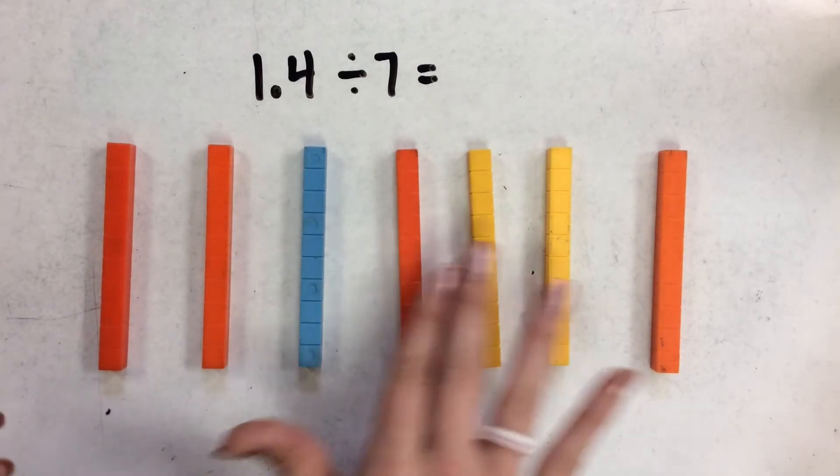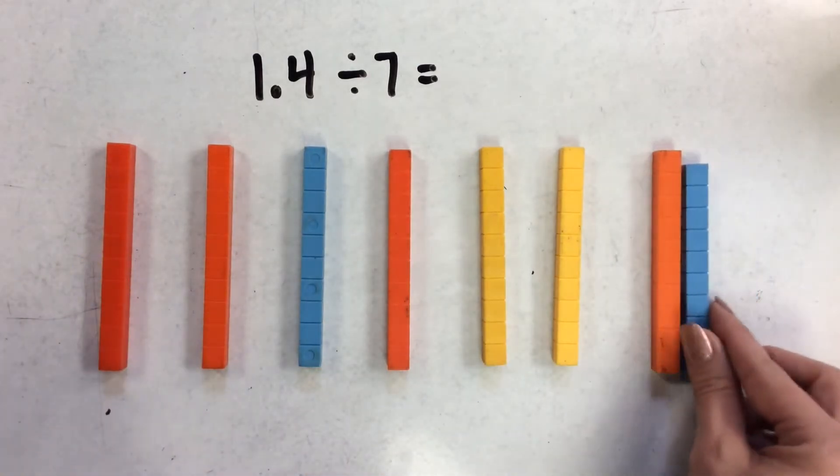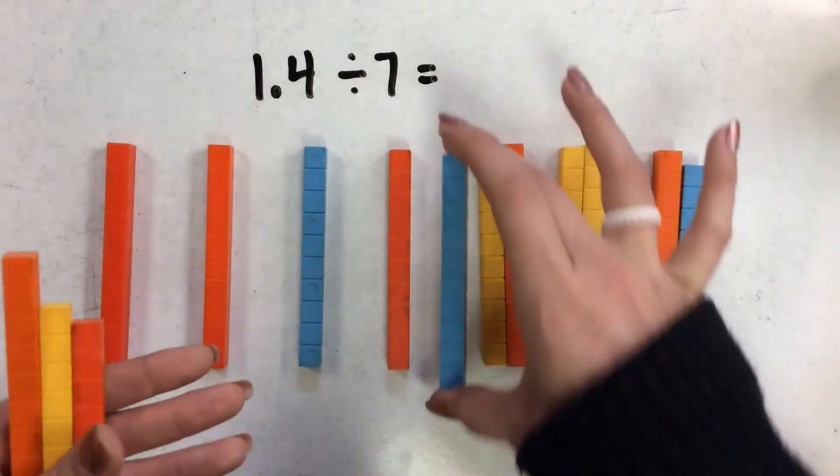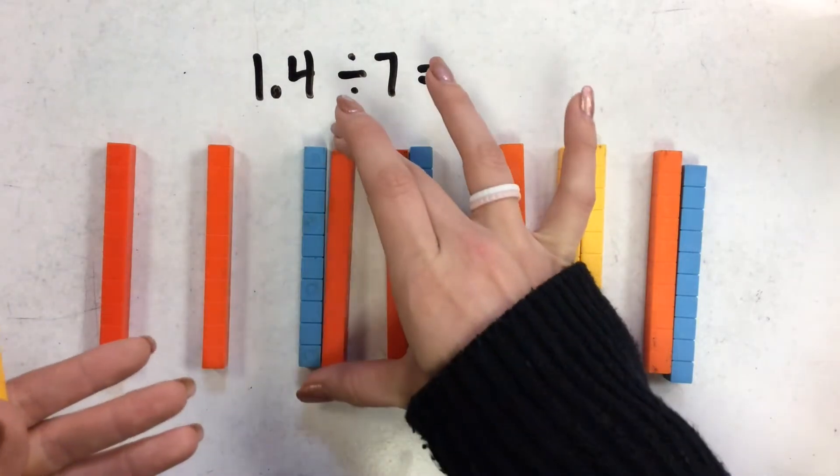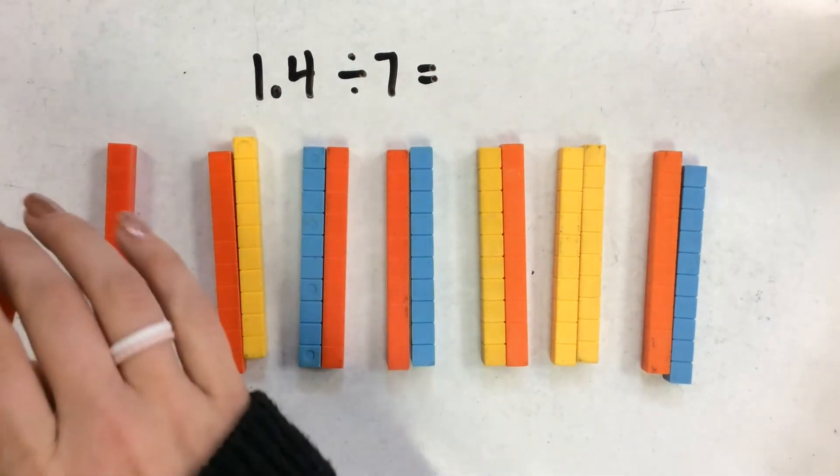And I still have some left over, so I'm going to split those up into those 7 groups too. So here's 1, 2, 3, 4, 5, 6, 7.